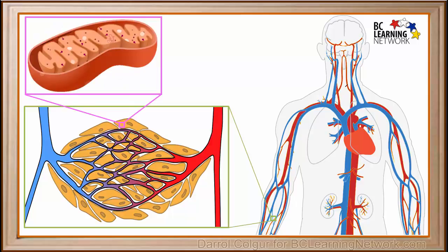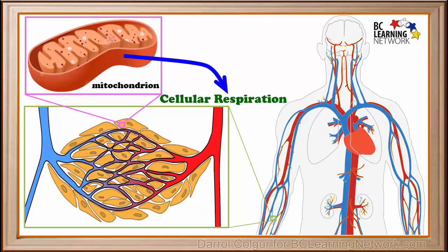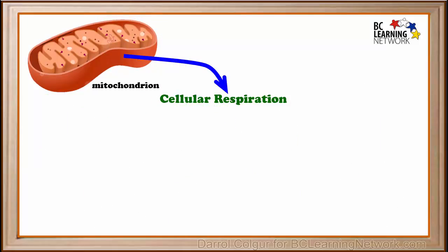Muscle cells contain a large number of mitochondria. Here is a mitochondrion. What occurs in a mitochondrion is a process called cellular respiration.